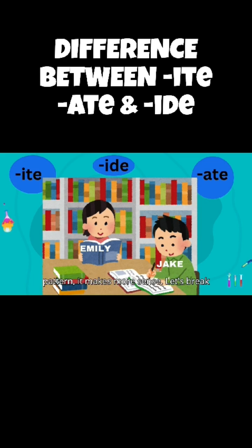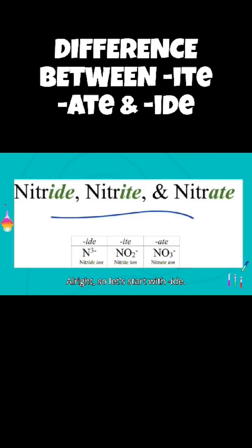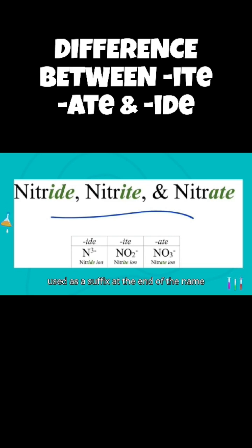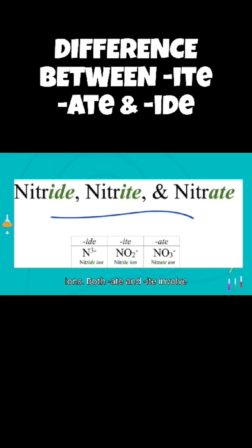But once you understand the pattern it makes more sense. Let's break it down. So let's start with -ide. The term -ide is used only for the non-metal monatomic ion, or anion. That is, when any non-metal atom is singly present and bears a negative charge, -ide is used as a suffix at the end of the name of the atom. Example: nitride.